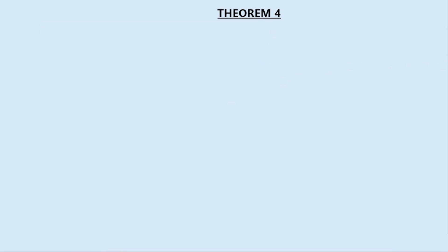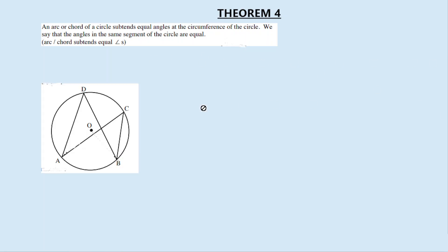Theorem 4 is about angles in the same segment. An arc or chord of a circle subtends equal angles at the circumference of the circle. We say that the angles in the same segment of the circle are equal. The reason you write is: angles in same segment — abbreviated as 'seg' — in same segment.